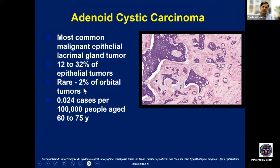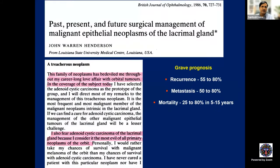Adenoid cystic carcinoma is the best known form of lacrimal gland malignancy — relatively rare, constituting only 2% of orbital tumors, and 0.024 cases per 100,000 people aged 60 to 75. It generally affects middle-aged individuals, but now even younger individuals are presenting. Pain and paresthesia are predominant symptoms. Henderson described it as a treacherous neoplasm: recurrence rate is 55 to 80% despite clinically complete excision, metastasis rate 50 to 80%, and mortality 25 to 80% in 5 to 15 years.